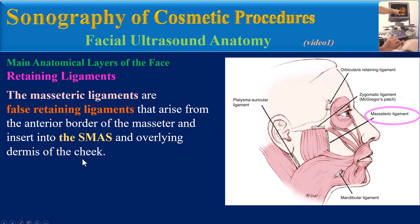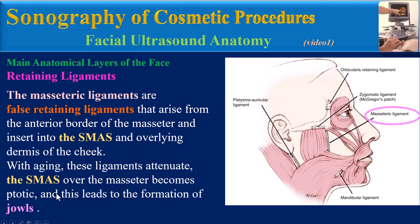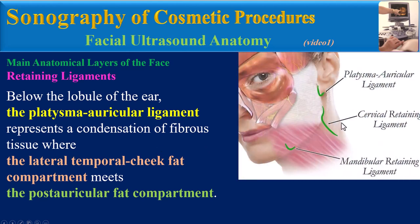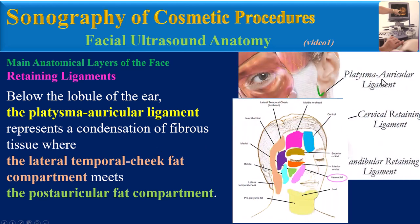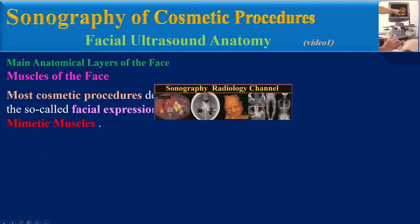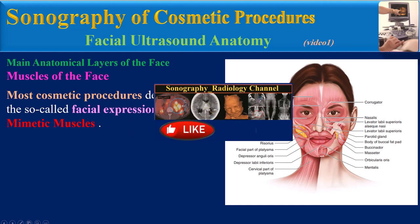The masseteric ligaments are false retaining ligaments that arise from the anterior border of the masseter and insert into the SMAS and overlying dermis of the cheek. With aging, these ligaments attenuate, the SMAS over the masseter becomes lax, and this leads to the formation of jowls below the level of the ear. The platysma-auricular ligament represents a condensation of fibrous tissue where the lateral temporal cheek fat compartment meets the posterior auricular fat compartment.